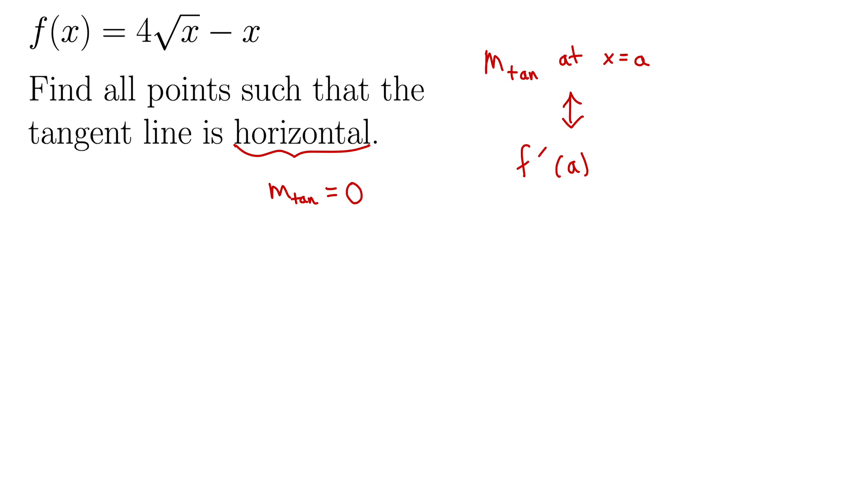Well, we're going to need the power rule here. Remember that the power rule tells us that when we're taking the derivative of x to the n, we bring that n down to the front, and then subtract 1. And remember that if we're dealing with radicals, we want to write those in exponential notation, so using rational exponents here.